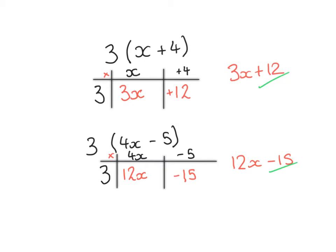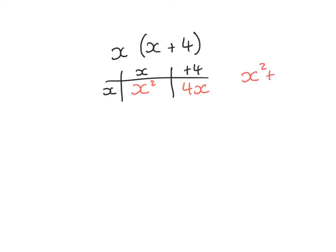You can also do other examples and more complex examples such as X brackets X plus 4. I'd set up my grid. X on the outside, X on the left, plus 4 on the right. X times X is X squared. And X.